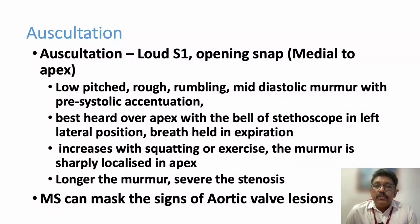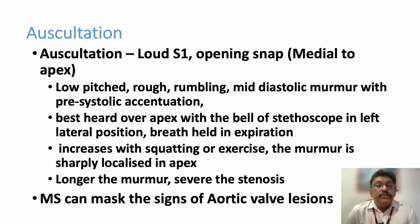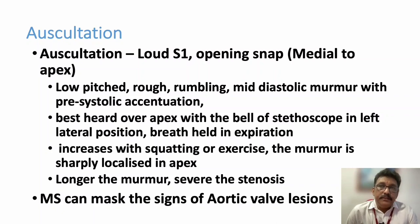At the end of diastole, the atrium contracts — the atrial booster kick — producing pre-systolic accentuation. So the murmur in mitral stenosis is a mid-diastolic murmur with pre-systolic accentuation. This murmur is best heard over the apex with the bell of the stethoscope in the left lateral position with breath held in expiration. All left-sided murmurs are better heard in expiration. The murmur is sharply localized to the apical area and can increase with exercise. In diastolic murmurs, it is the length of the murmur — not the loudness — that determines severity.